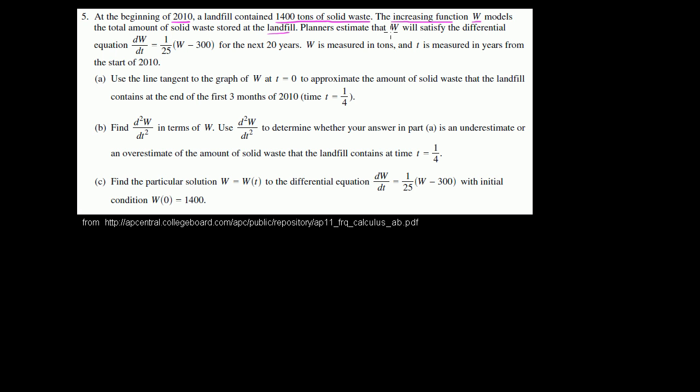Planners estimate that w will satisfy the differential equation: the derivative of w with respect to time equals 1 over 25 times the quantity w minus 300, for the next 20 years. W is measured in tons, t is measured in years from the start of 2010.